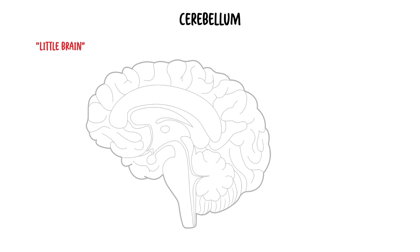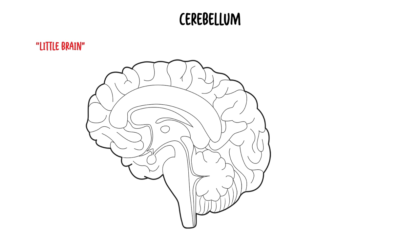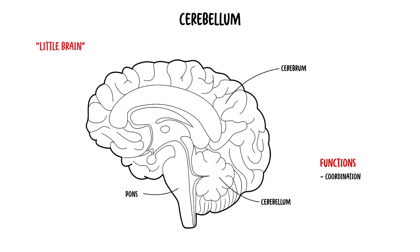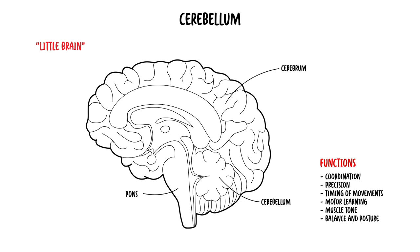The word cerebellum means 'little brain.' It is a structure of the nervous system that has an important role in motor control. In particular, the cerebellum is important in the coordination, precision and timing of movements, as well as motor learning and the maintenance of muscle tone, balance and posture.